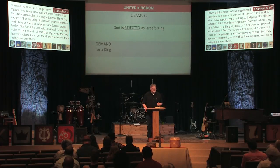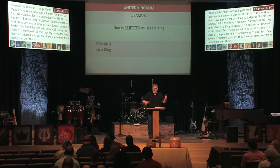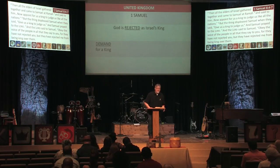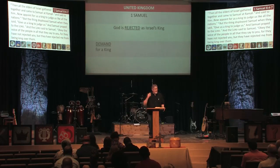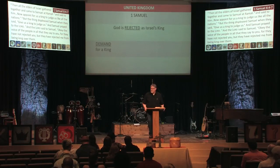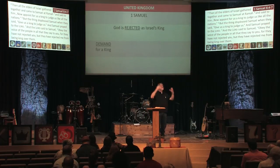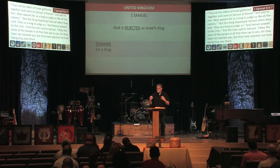In 1 Samuel 8, verses 4 through 7, Samuel is the last judge and the first prophet — a transitional figure. God and Samuel are very close, and Samuel is upset because the nation of Israel is saying they want a king like all the other lands and nations around them. But they were supposed to be unique — distinct, with God alone as their king, a theocracy, not a monarchy.